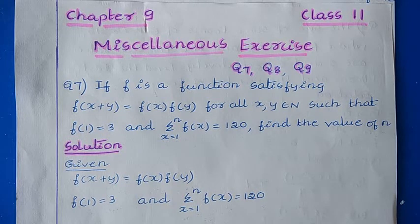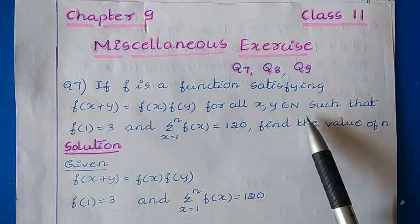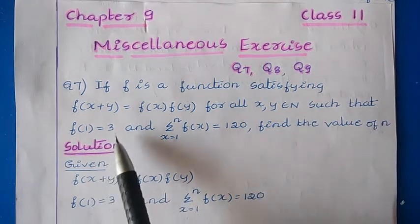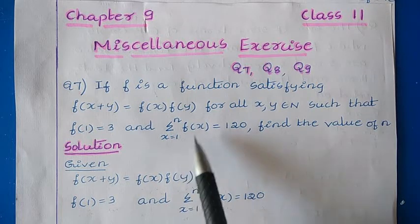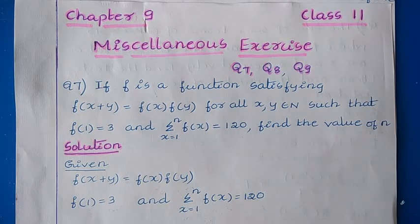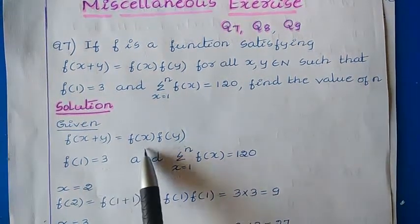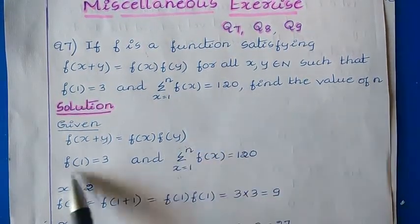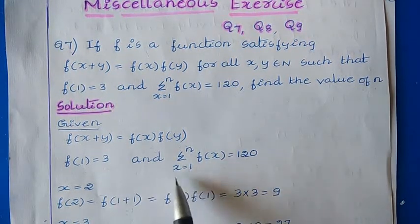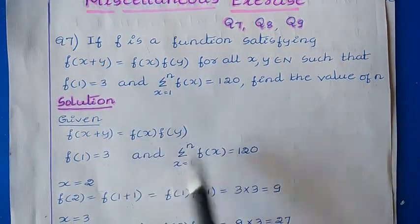Question number 7: if f is a function satisfying f(x+y) = f(x)·f(y) for all x, y belonging to N — where N means the set of natural numbers — such that f(1) = 3 and the sigma from x=1 to N of f(x) equals 120, find the value of N. In this question, these 3 values are given.